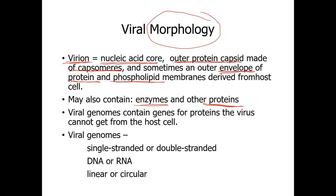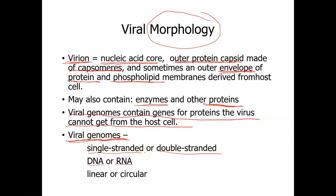Viral genomes can contain genes for proteins that the virus cannot get from the host cell. If it can get these proteins from its host cell, then it doesn't need them. But if it needs an enzyme the host cell does not provide, the viral genome can contain the gene for that enzyme. The genome is the nucleic acid inside the core of the virus. There are four basic types of genomes: single-stranded DNA, single-stranded RNA, double-stranded DNA, and double-stranded RNA.